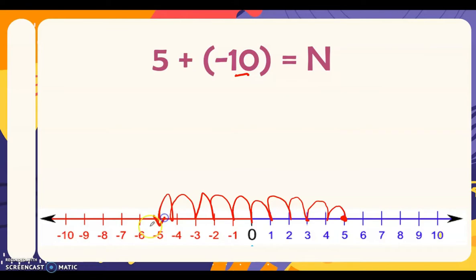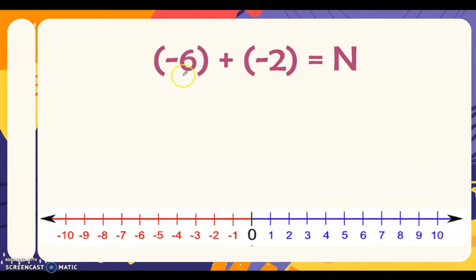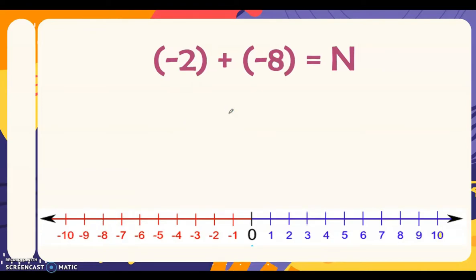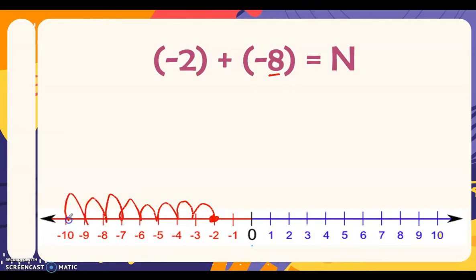From five, we move ten times to the left: one, two, three, four, five, six, seven, eight, nine, ten — therefore we end at negative five. Our answer is negative five. Next, we have negative six plus negative two. We locate negative six, then we add negative two. Since it is negative we move to the left two times: one, two — and we end up at negative eight. Therefore, negative six plus negative two is equal to negative eight.